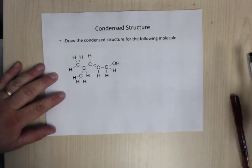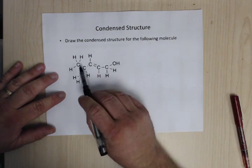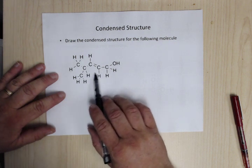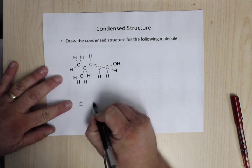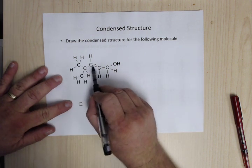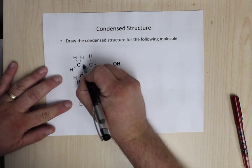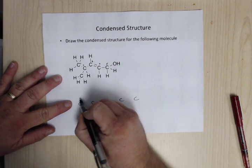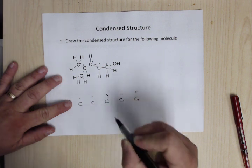So for the condensed structure, what you're going to do is try to find the longest stretch of the carbons. So go ahead and write those out. One, two, three, four, five. You can always mark them. One, two, three, four, five. It makes it a little easier for you.